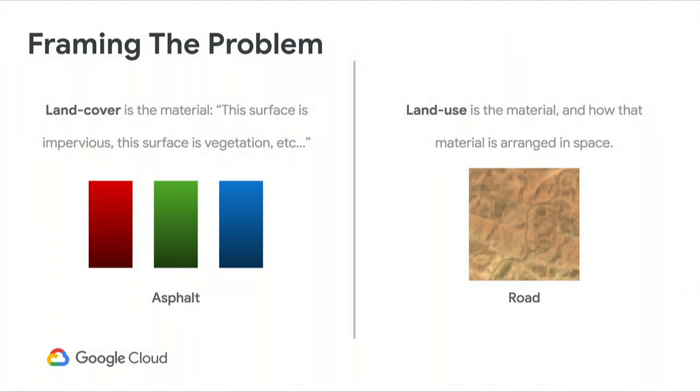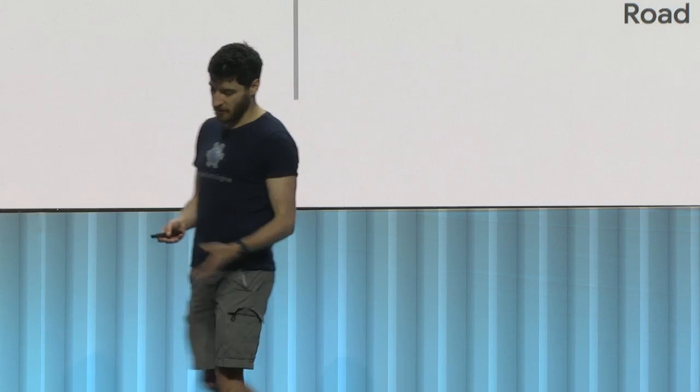This is a machine learning problem and a big data problem. Think about land cover — and land use more specifically. If we consider a parking lot and a road, they're both made of asphalt. If all you knew was the material via reflectance, you couldn't tell the difference. It doesn't just matter what something's made of; it's the arrangement of that material in space. This transforms our problem from looking at a single pixel's reflectance to looking at many pixels, because we need to know how material is arranged in space. Our inputs go from just red, green, blue, ultraviolet, and infrared to those same bands over 64×64 or greater patches of pixels — that's a ton of input data.